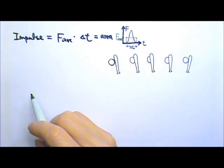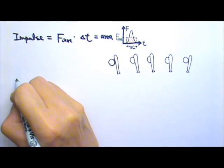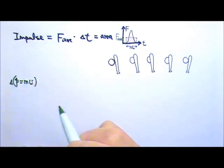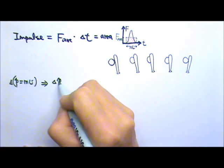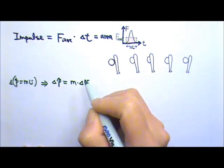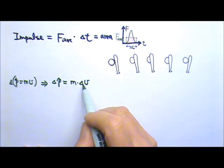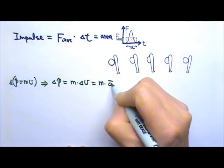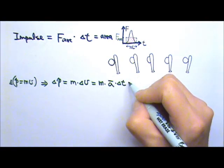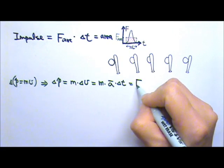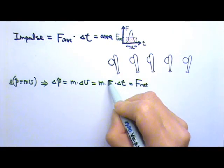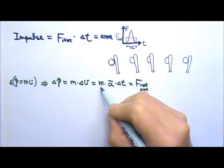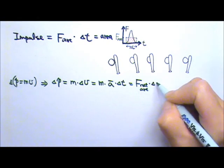If we go back and look at the momentum equation again, the momentum is mv. If we look at the changes, the change in momentum is m times delta v, because if the mass doesn't change we can take it out of the delta. And delta v is the average acceleration times time, giving us ma, which is the net force — but because this is the average acceleration, this gives us the average net force times time.